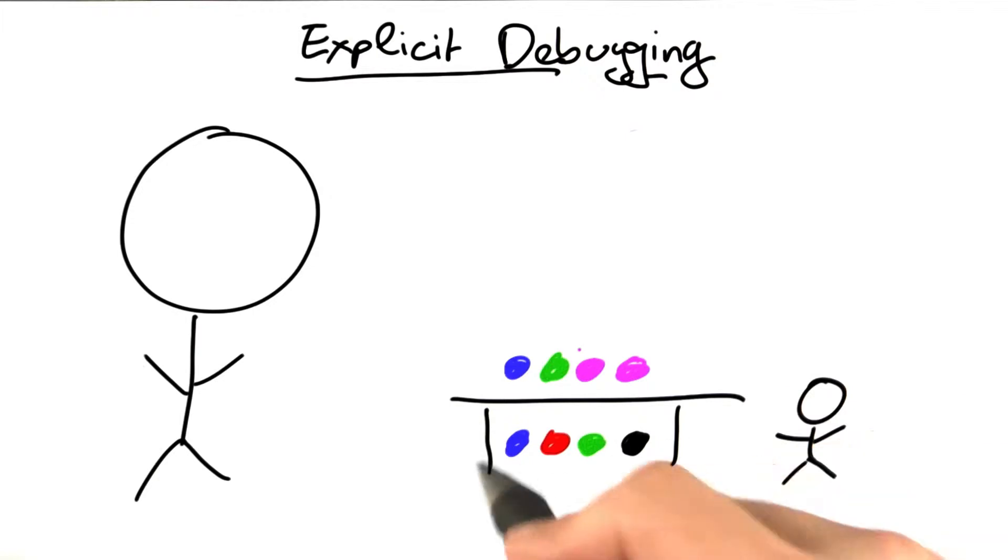So you come up with one trial, and you get points for every color that's in the right position, and for every color that's correct but not in the right position.